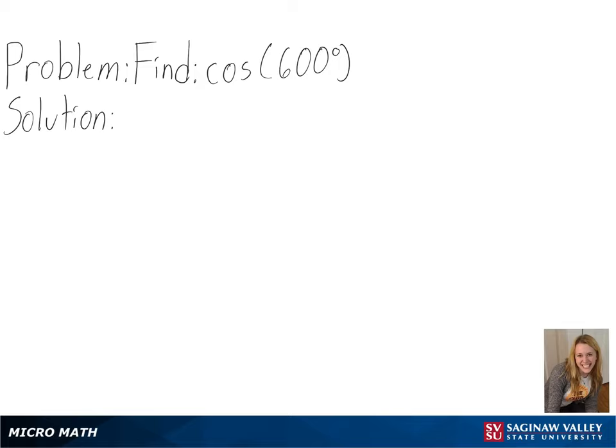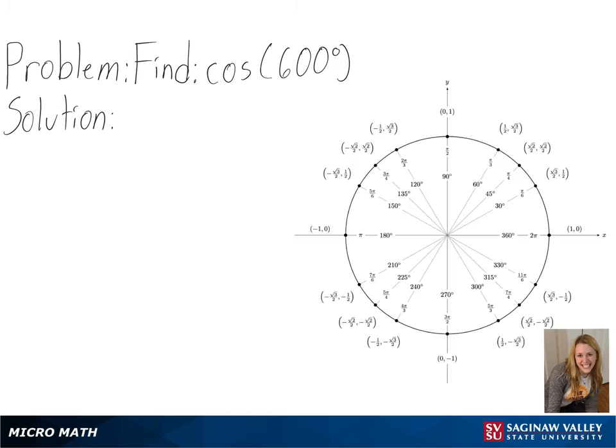Our problem is to find cosine of 600 degrees. To solve this, we will be using a unit circle.